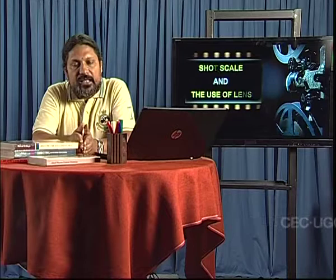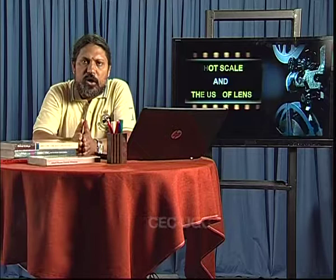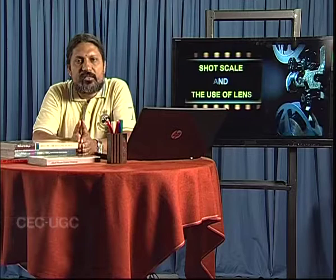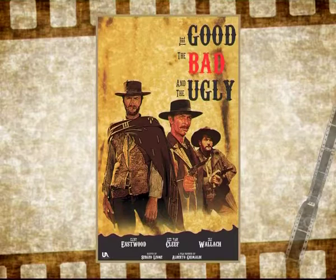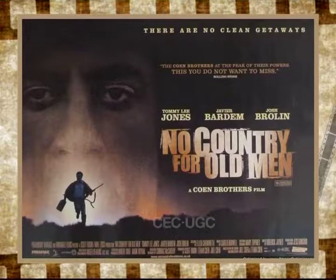Notable examples of extreme long shots being used to open up a film are usually found in the western genre — to name a few: A Fistful of Dollars, The Good, The Bad, The Ugly, Red River, My Darling Clementine, No Country for Old Men, The Searchers, and so on.